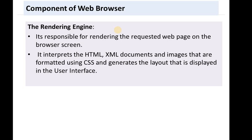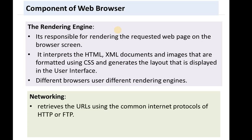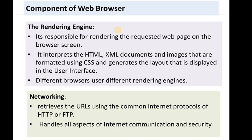Different browsers use different rendering engines. For example, Chrome and Safari use WebKit, and Internet Explorer uses Trident. After that, networking: it retrieves the URL using common Internet protocols — HTTP or FTP. It handles all aspects of Internet communication and security, and also manages cache memory of retrieved documents to reduce network traffic.